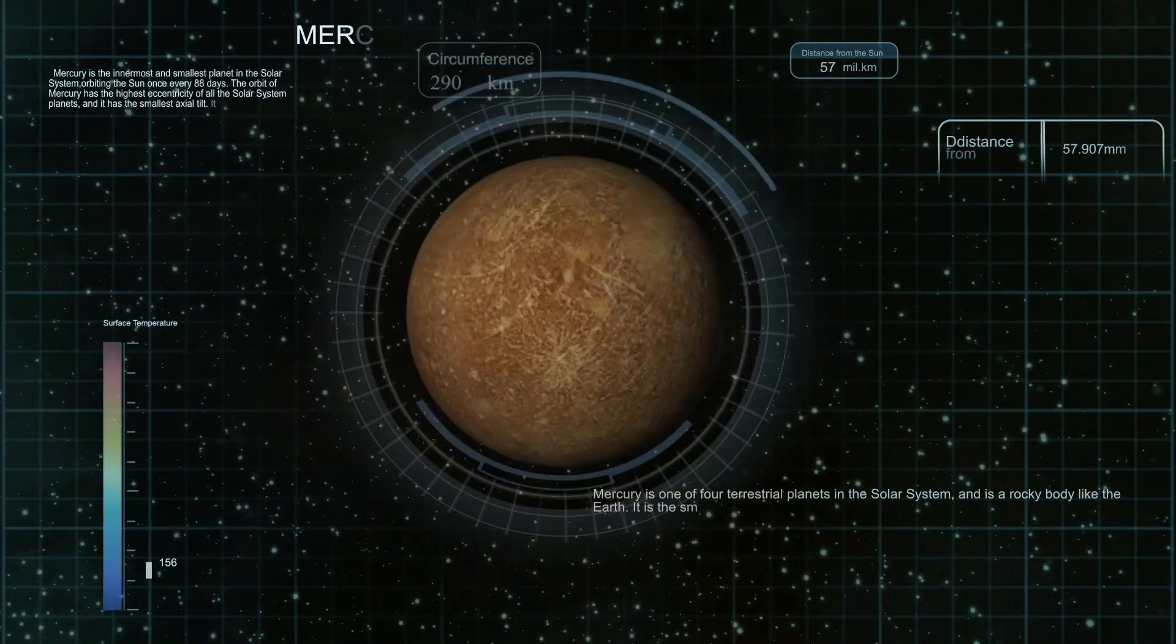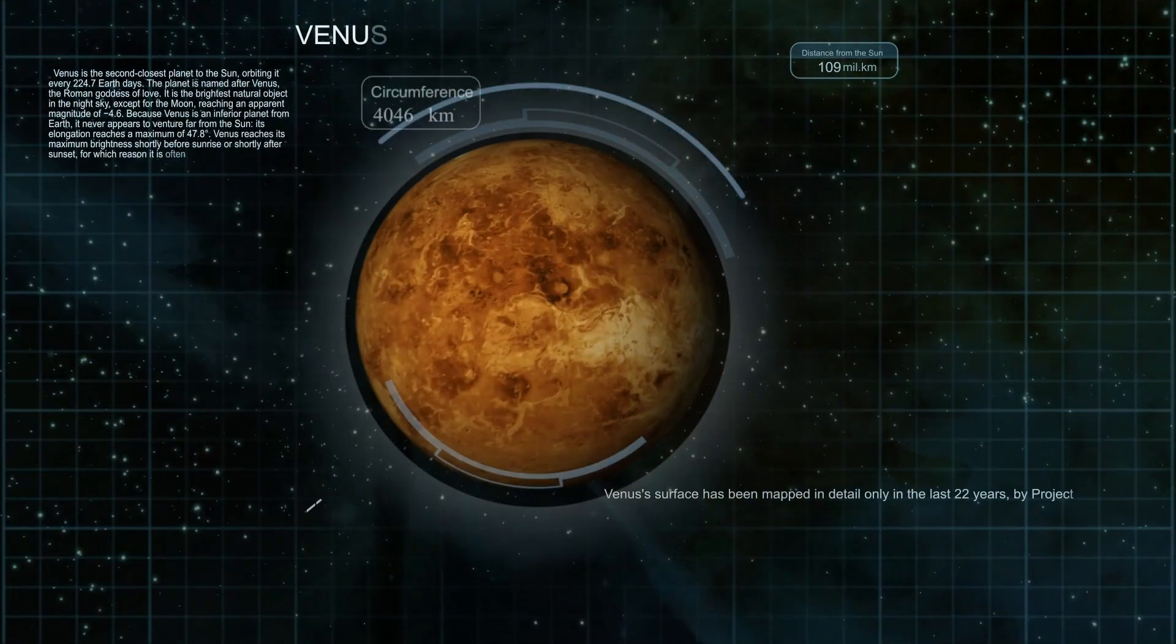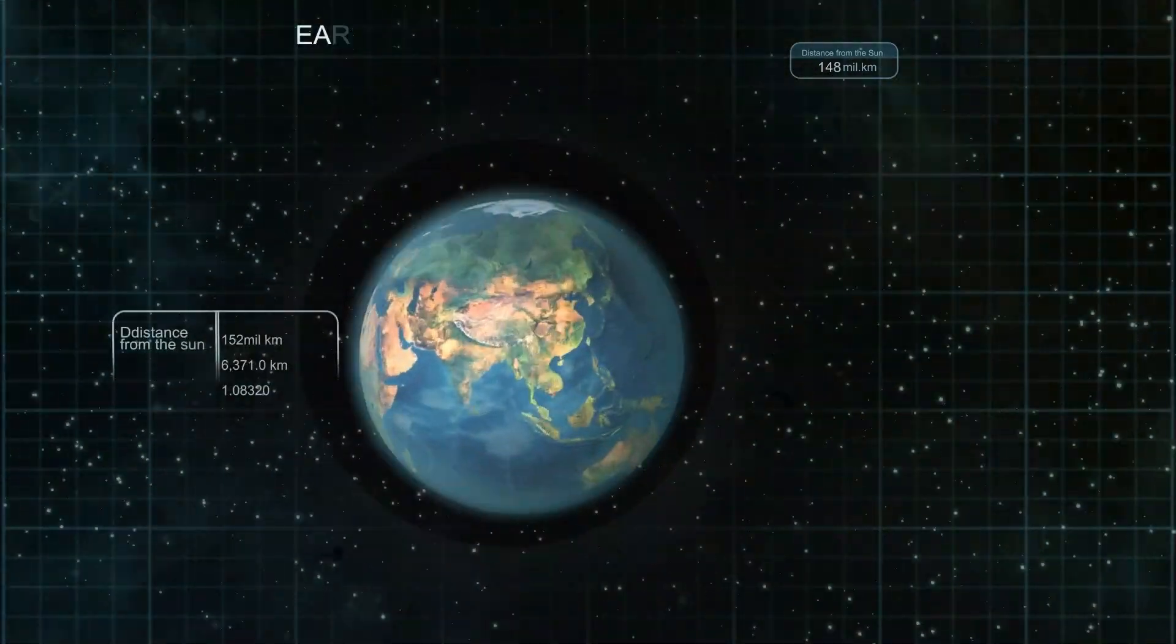By studying Neptune in infrared, astronomers gain new insights into its atmospheric composition, cloud dynamics, and seasonal changes. Webb's observations continue to enhance our understanding of this distant ice giant, shedding light on its complex and ever-changing weather patterns.